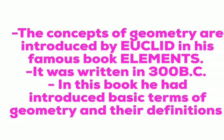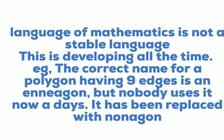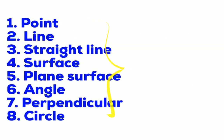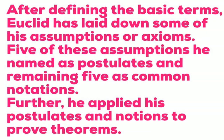Euclid's Elements was written in 300 BC. In this book, he introduced the basic terms of geometry and their definitions. He provided definitions of the point, lines, straight lines, surface, plane surface, what is an angle, perpendicular, and circle - all these foundational geometry concepts.